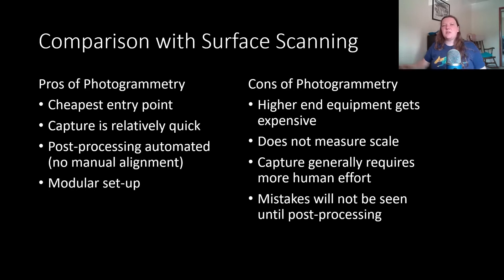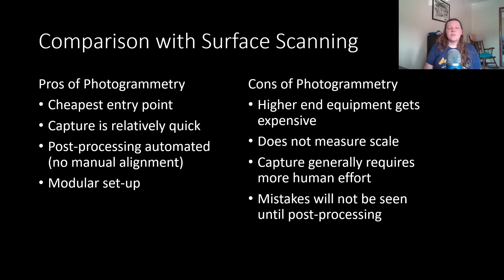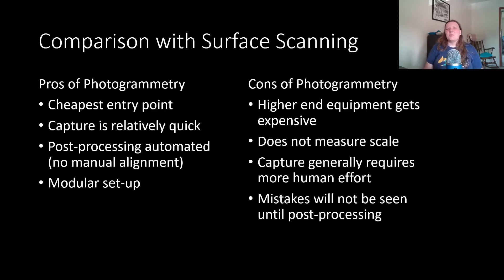I wanted to compare the pros and cons of photogrammetry versus surface scanning — I've already compared surface scanning and CT scanning in earlier videos, and the photogrammetry vs. CT comparison is essentially the same, so I won't cover that here. On the pros side, photogrammetry is the absolute cheapest entry point — bare minimum you need a phone with a camera and a cloudy day outside and you can produce a usable model. Of course, if you want higher resolution or a consistent indoor setup, you'll need more equipment, which adds cost.